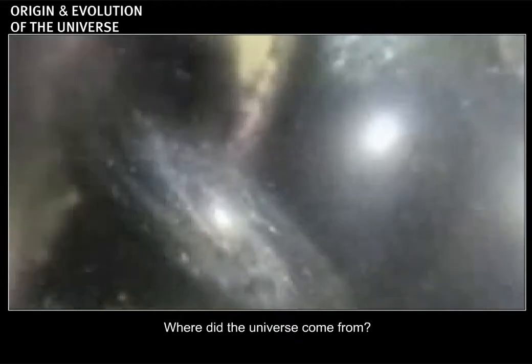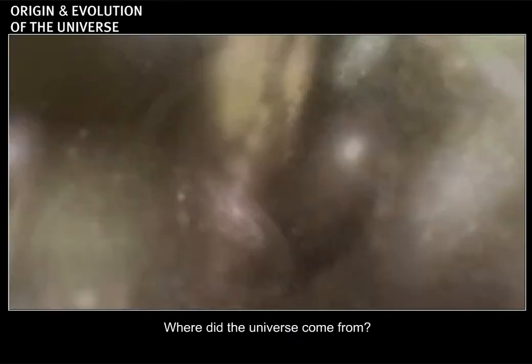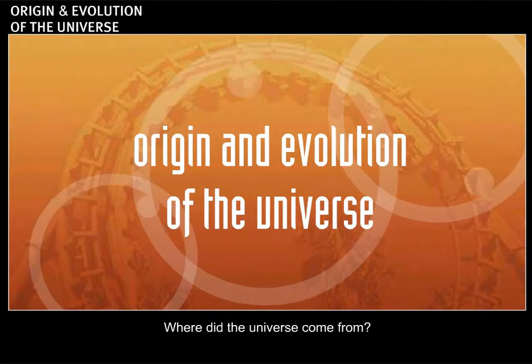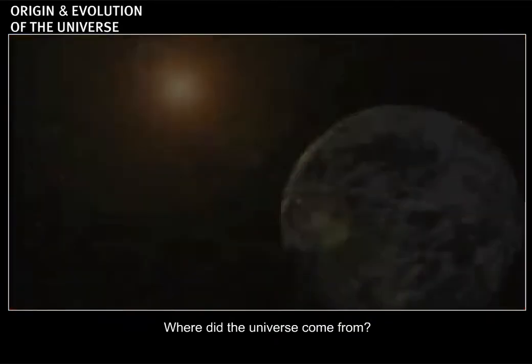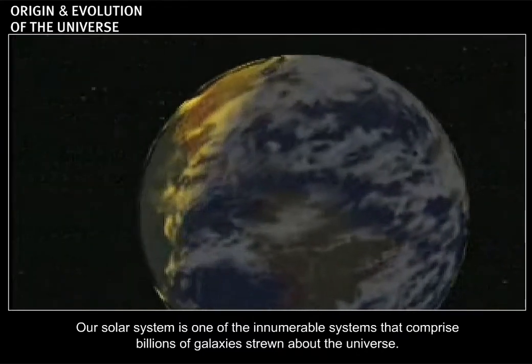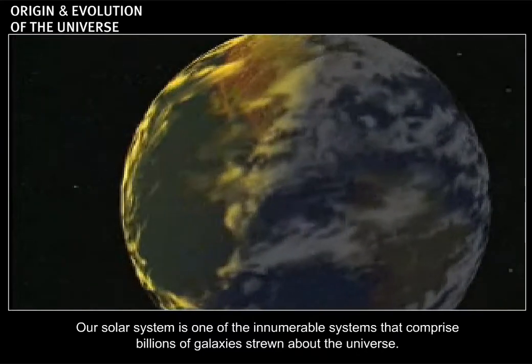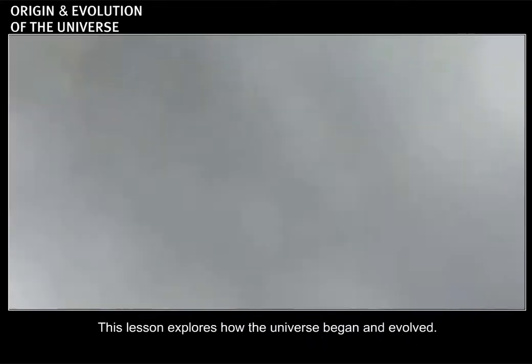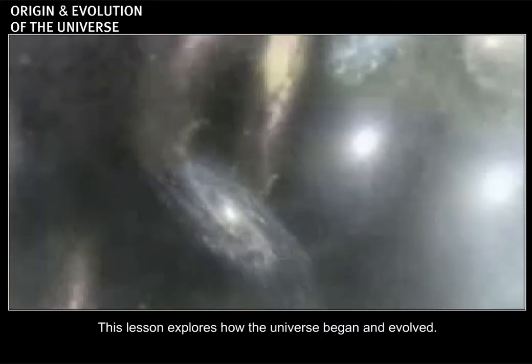Where did the universe come from? Our solar system is one of innumerable systems that comprise billions of galaxies strewn about the universe. This lesson explores how the universe began and evolved.